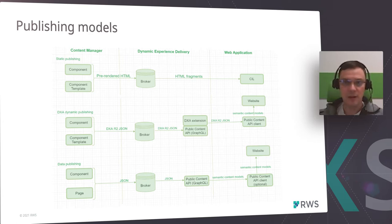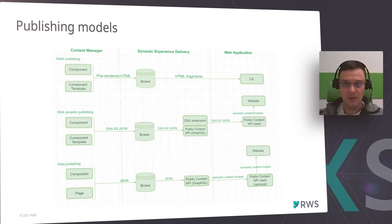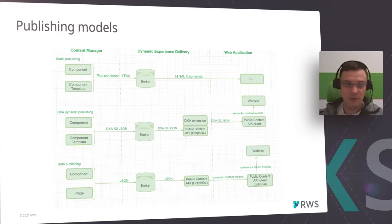The next evolution step is DXA dynamic publishing, where we publish a data model in DXA R2 JSON format to the broker database. However, we are still using templates to convert XML to JSON data. On the Dynamic Experience Delivery side we have a public content API with a DXA extension that consumes DXA R2 JSON from the broker and produces semantic content models to the application through the public content API client. A valid question is: why do you need templates to produce native data from Content Manager to Dynamic Experience Delivery?